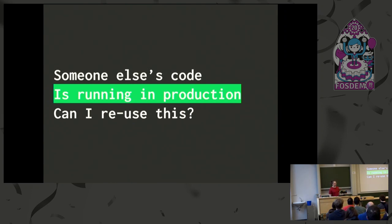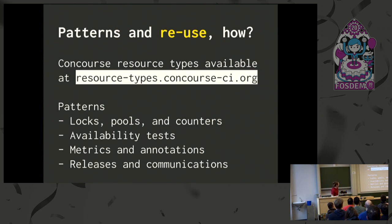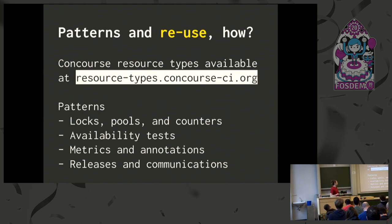This is our code — it's been running in production for about five years. Can you reuse it? Yes — there's a microsite called Resource Types on the Concourse website where the community shares resource types. The Git resource is there, the Terraform resource is there, there are Kubernetes resources, and more. Sometimes you'll want to automate something and someone will have already made a resource for it. Use it, and contribute back — fix other people's bugs.